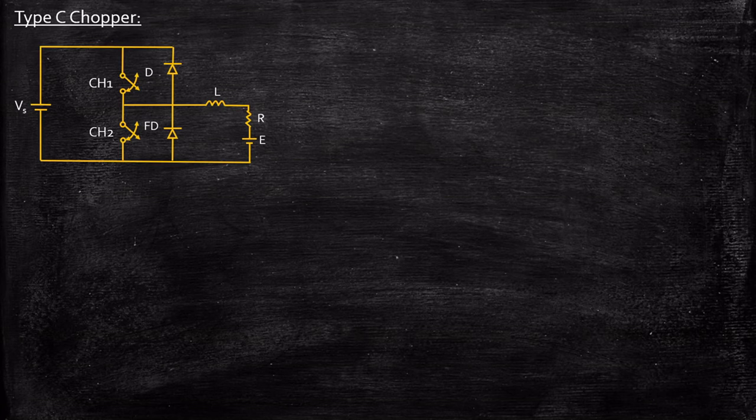Hello everyone. In this video we will be taking a look at type C chopper. This is the circuit diagram of a type C chopper. Basically, type C chopper is a combination of type A and type B chopper together for it to operate in two quadrants.